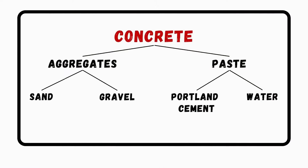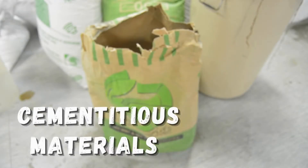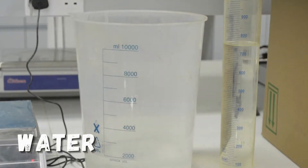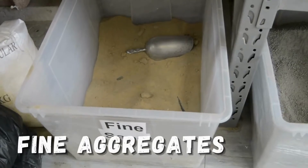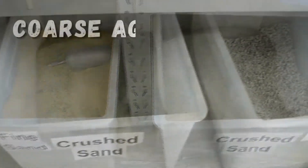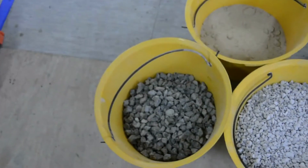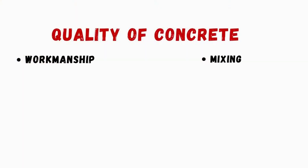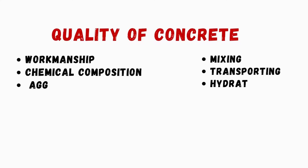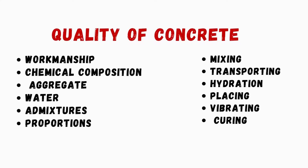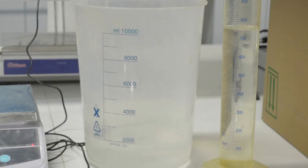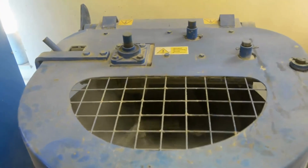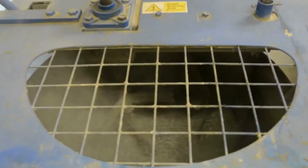Aggregates and paste are the main ingredients of concrete. As the paste solidifies, as a result of the chemical interaction between the Portland cement and water, it binds the aggregates — often sand and gravel or crushed stone — into a mass resembling rock. Engineers are directly responsible for the design of the mix and the final quality of the concrete. And these are the factors that can affect the quality of the concrete.